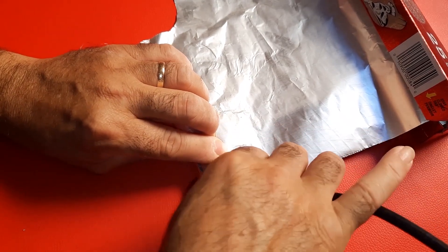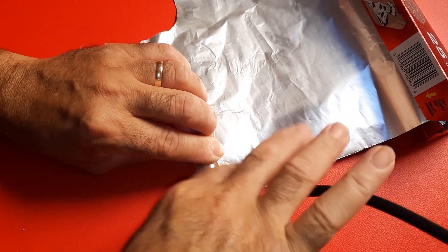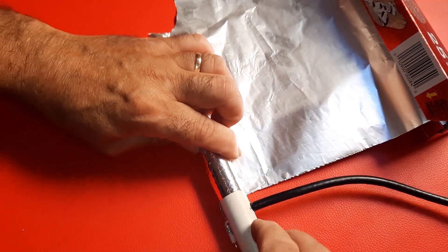6. Try to give it two tightly wrapped turns and tuck the excess aluminum foil into the PVC pipe's cavity.